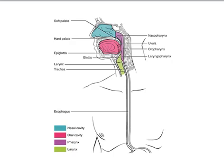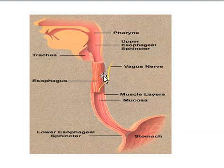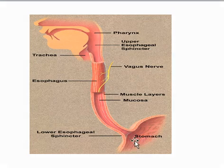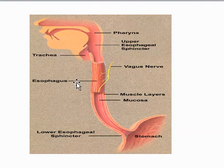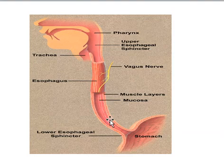The esophagus is a straight muscular tube extending from the cricoid cartilage of the larynx, penetrating the diaphragm and meeting the stomach. Histologically, the muscle of the esophagus in the first third is mostly skeletal muscle, while in the second third it is mixed smooth and skeletal muscle, and the final third contains only smooth muscle.